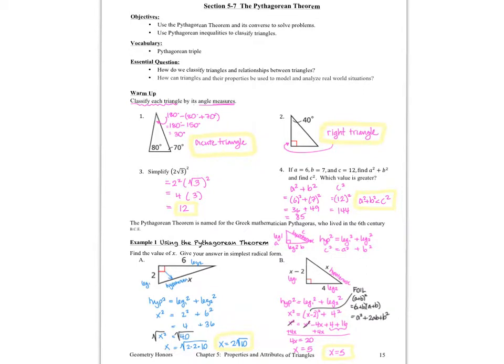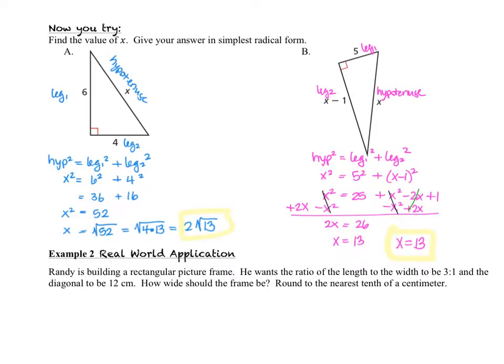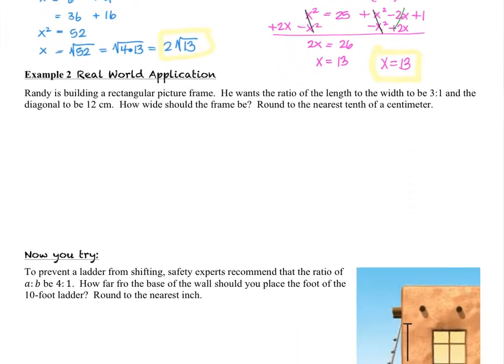On the next page, there are a couple of triangles for you to practice on. Work on the Now You Try questions A and B, and turn the video back on when you're ready to check your answers. You probably found these were pretty straightforward. In both cases the hypotenuse was X, but we did have some FOIL practice in question B. Let's take a look now at Example 2, a real-world application.